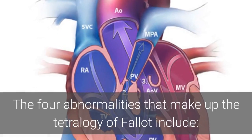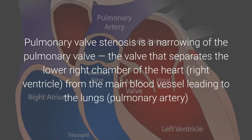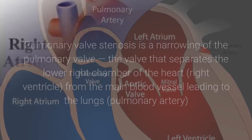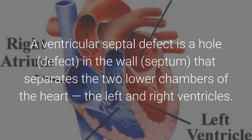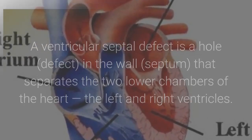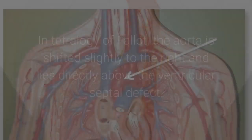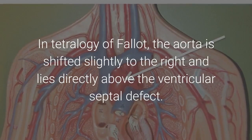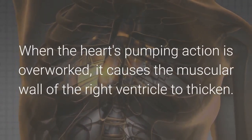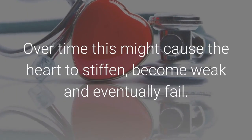The four abnormalities that make up Tetralogy of Fallot include: 1) Pulmonary valve stenosis — a narrowing of the pulmonary valve, the valve that separates the right ventricle from the pulmonary artery. 2) Ventricular septal defect — a hole in the wall (septum) that separates the two lower chambers of the heart, the left and right ventricles. 3) Overriding aorta — normally the aorta branches off the left ventricle, but in Tetralogy of Fallot the aorta is shifted slightly to the right and lies directly above the ventricular septal defect. 4) Right ventricular hypertrophy — when the heart's pumping action is overworked, it causes the muscular wall of the right ventricle to thicken. Over time this might cause the heart to stiffen, become weak and eventually fail.